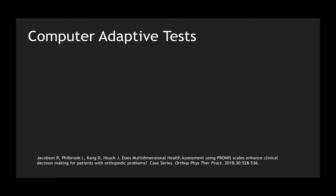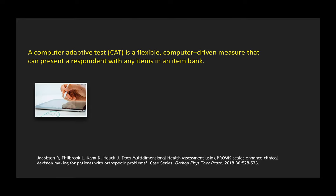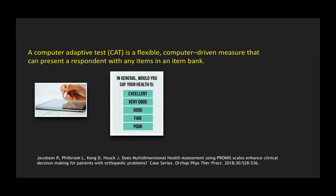Computer adaptive tests are a distinct advantage of PROMIS and other newer measures. A computer adaptive test is a flexible, computer-driven measure that can present a respondent with any item from an item bank. The person using an iPad responds to items selected by the algorithm, typically finding a score in less than a minute.